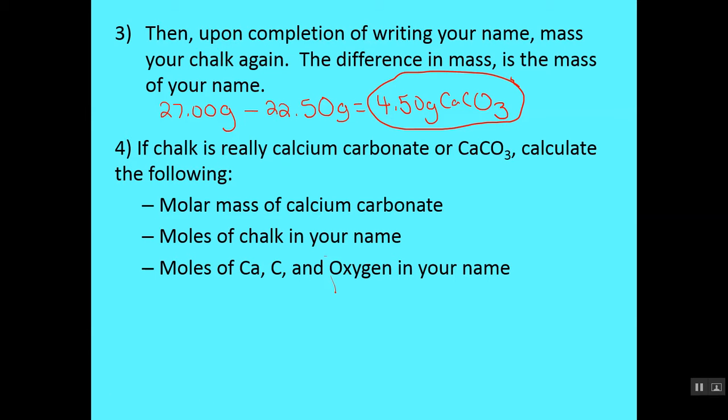And step four was actually the step where you had to do several calculations. It included molar mass. I'm going to label that A, moles of chalk, which I'll label B, and then moles of calcium, carbon, and oxygen, which I'll label C. So, with that, really quickly, let's just review what each of these would be.